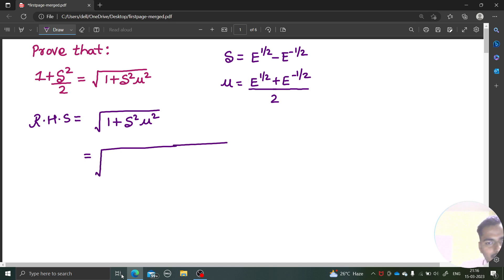Under root will be a little larger in size this time. 1 plus delta is e power half minus e power minus half whole square, and your mu will be e power half plus e power minus half divided by 2 whole square.